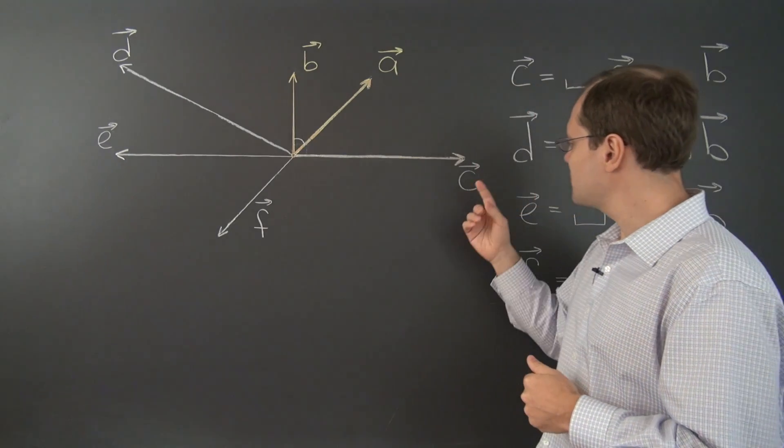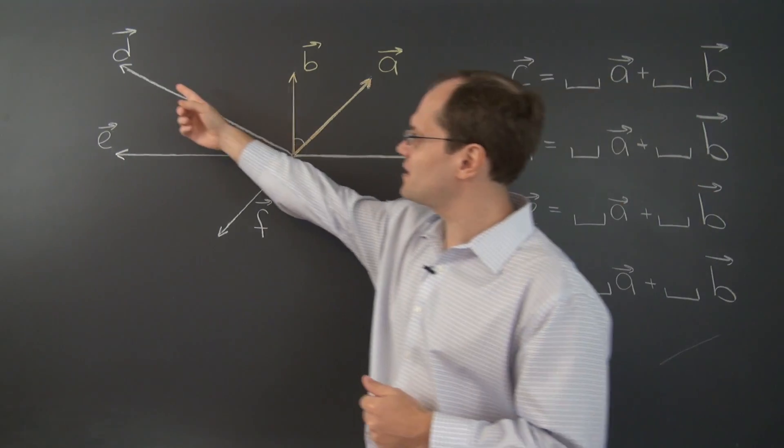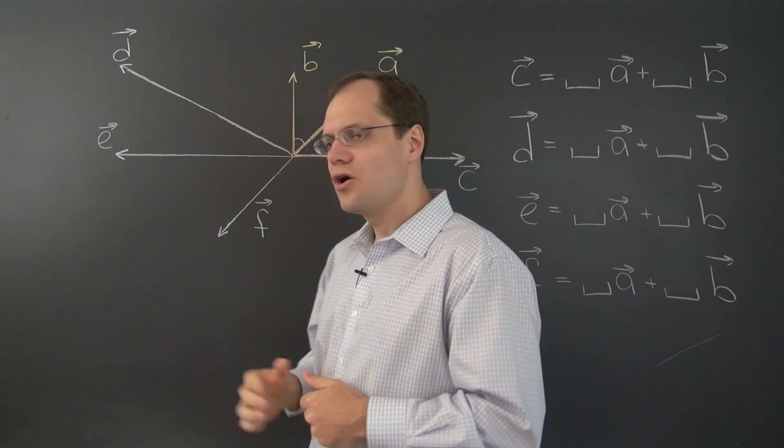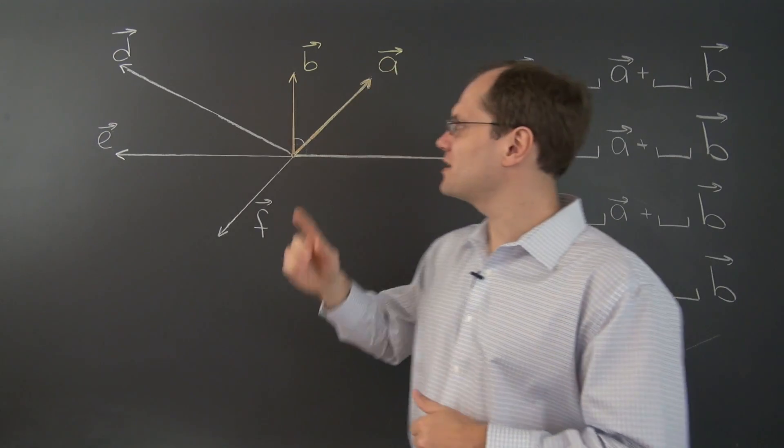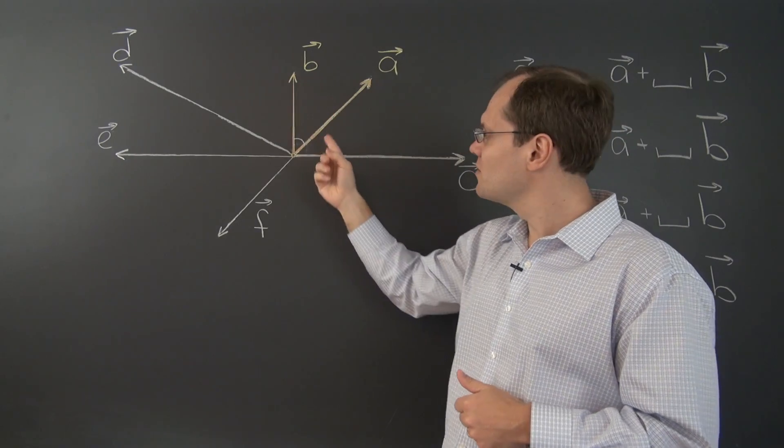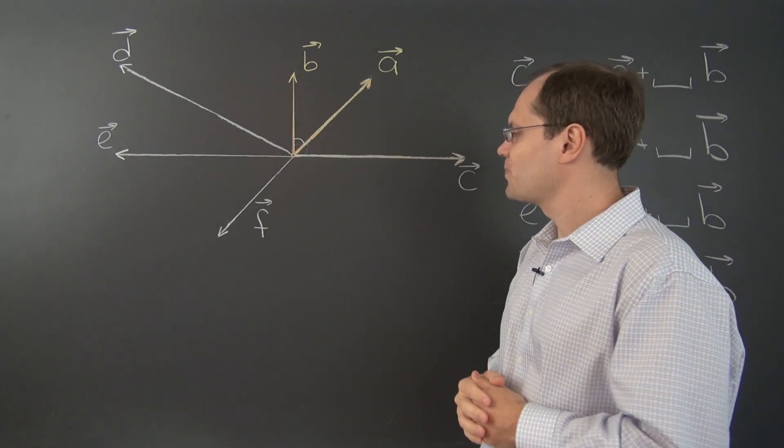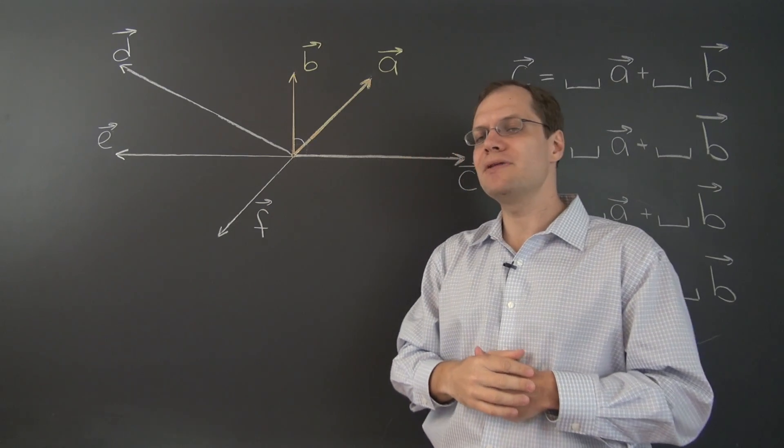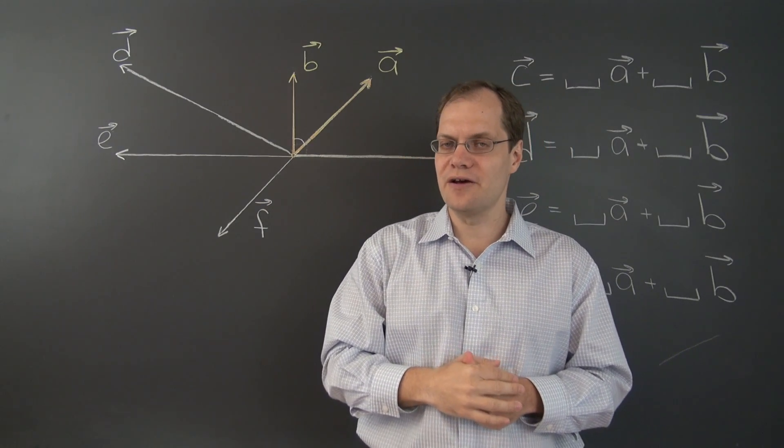The task is to decompose the new vector c and the old vectors d, e, and f with respect to the new pair of vectors a and b. Of course the vector b is the same as before, but the vector a is new. And this set of examples is more complicated than the ones from the first video.